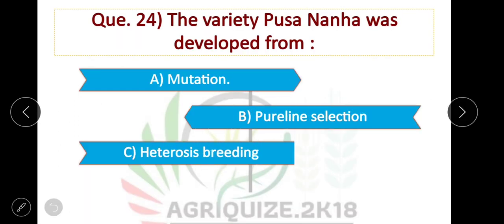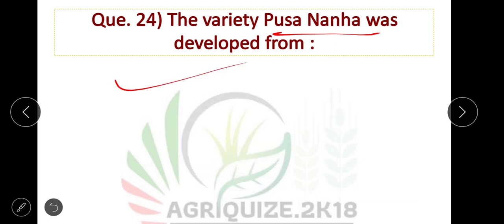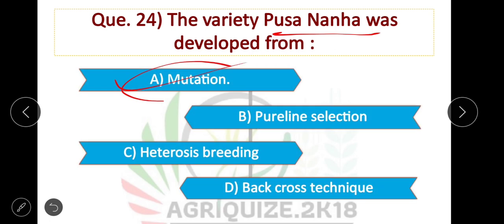Question number 24: The variety Pusa Nanha was developed from mutation breeding. The option is correct.